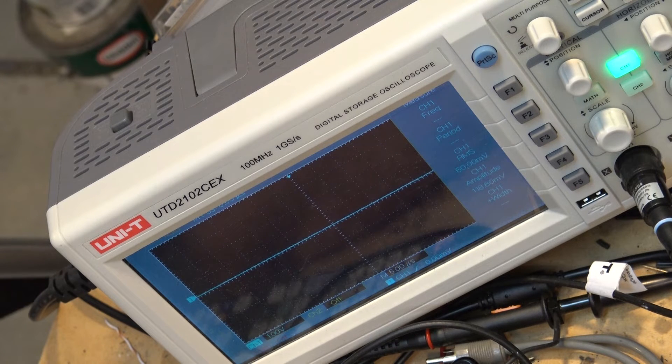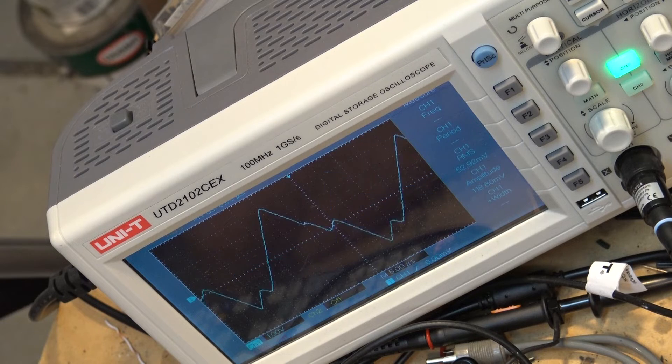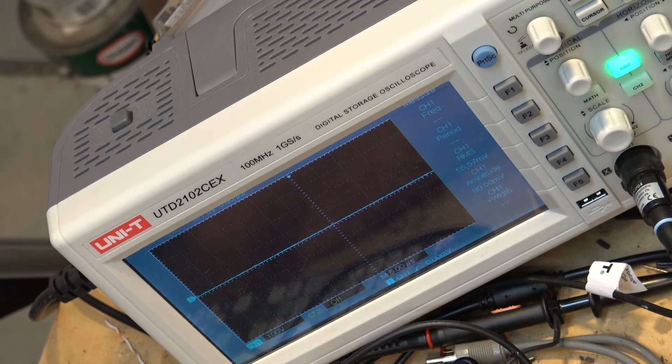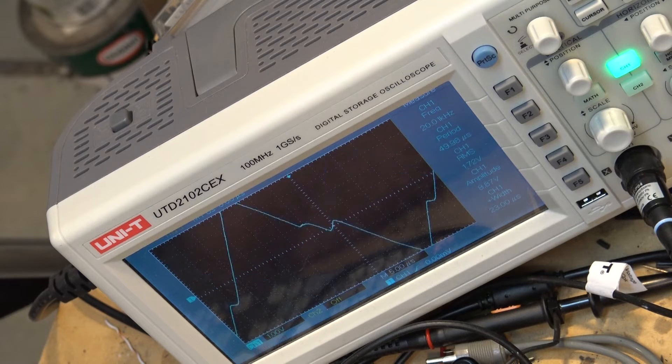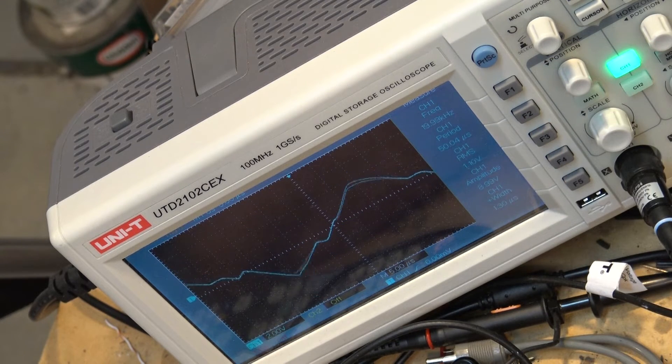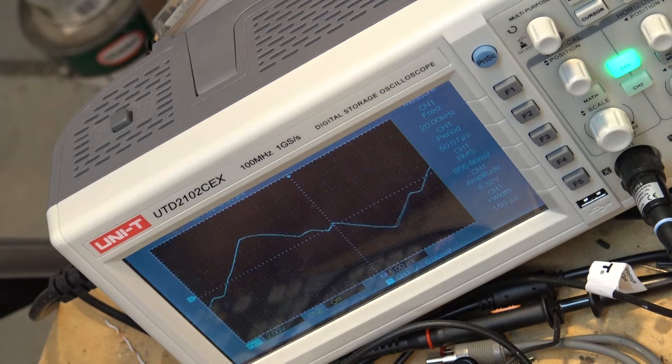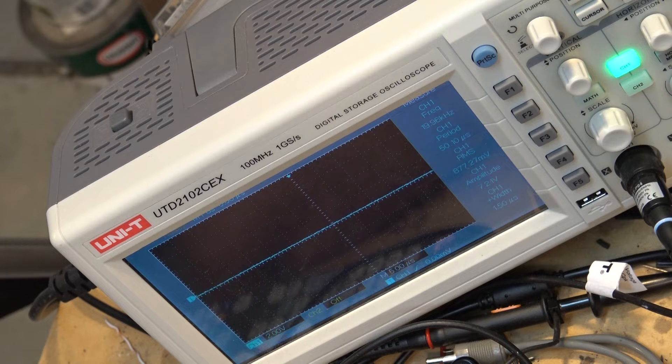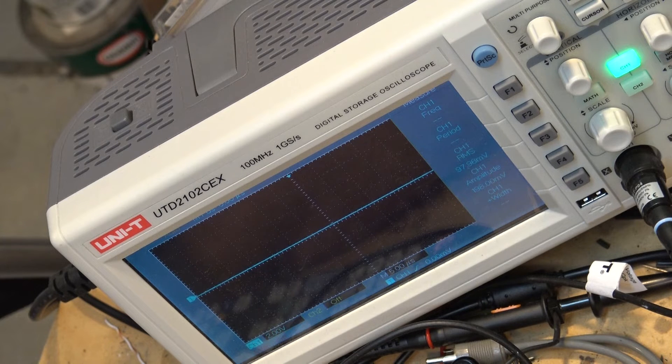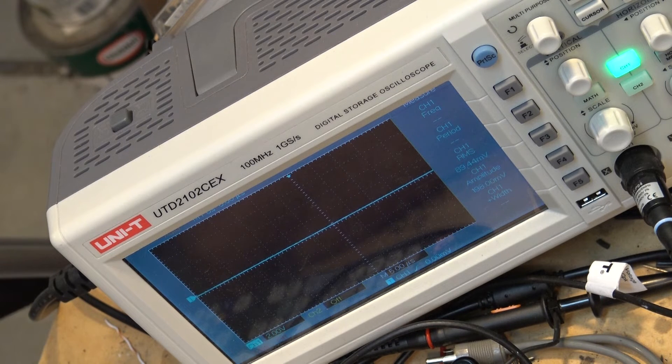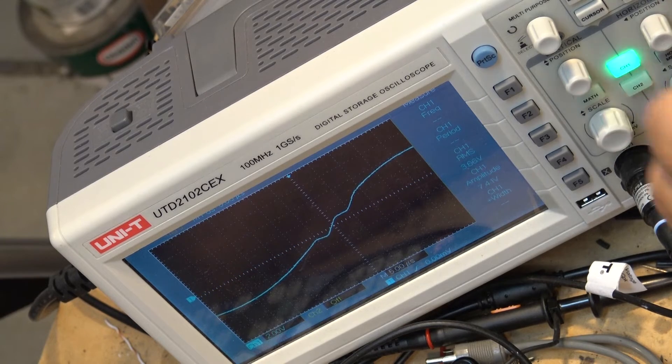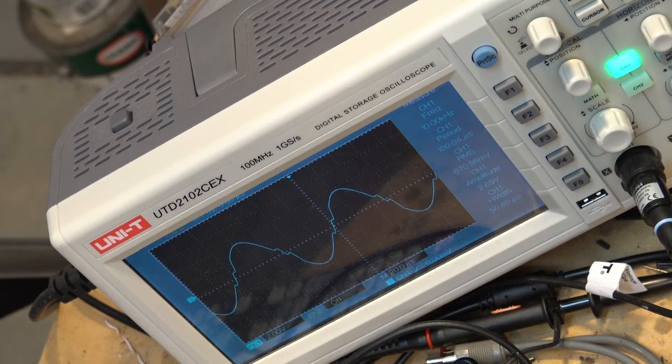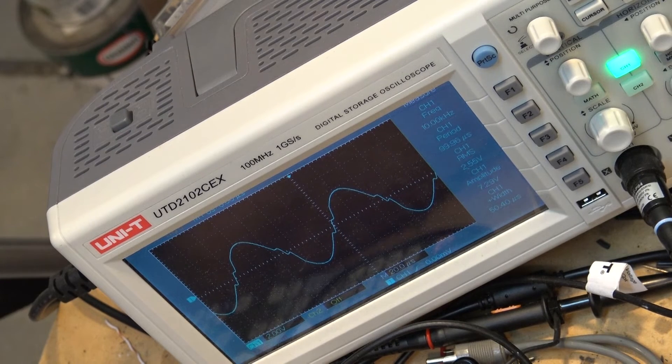Let's see where the signal starts to get really distorted. We'll take it down to 30 kilohertz and start there. So 30 kilohertz. No. Fail. 20 kilohertz is a fail. That's not a sine wave. How about 10? 10 kilohertz has got distortion on it, too. So you're not going to use this thing for 10 kilohertz.